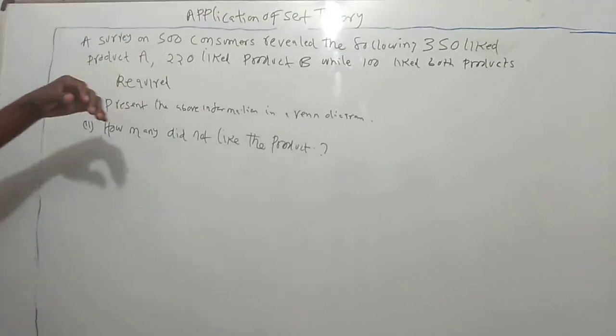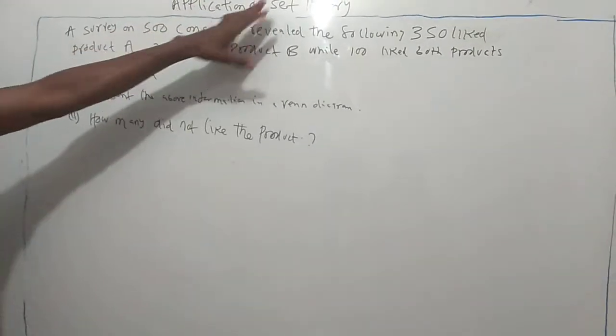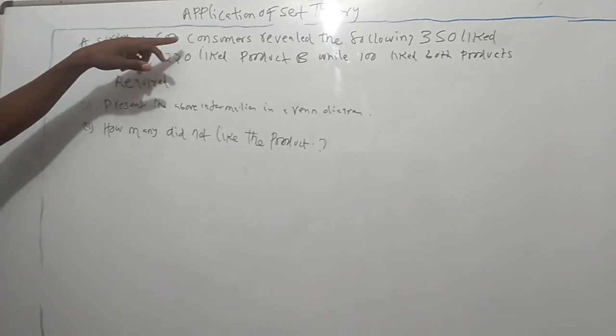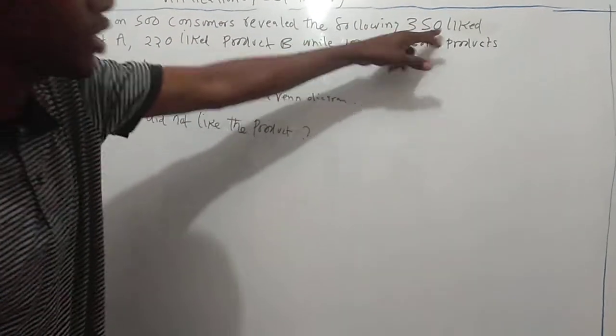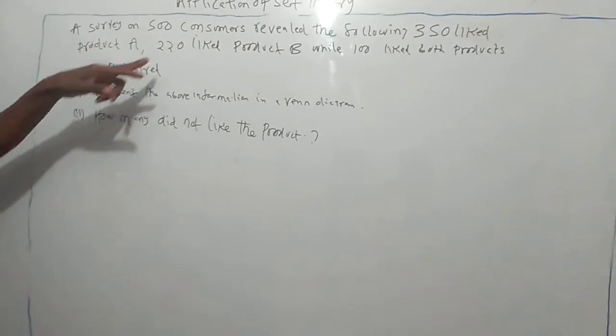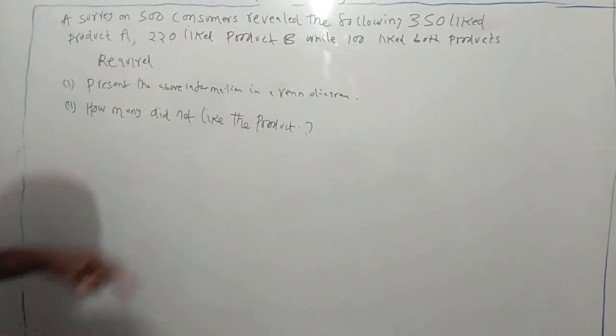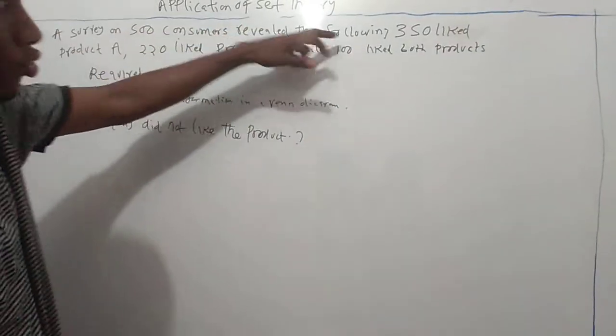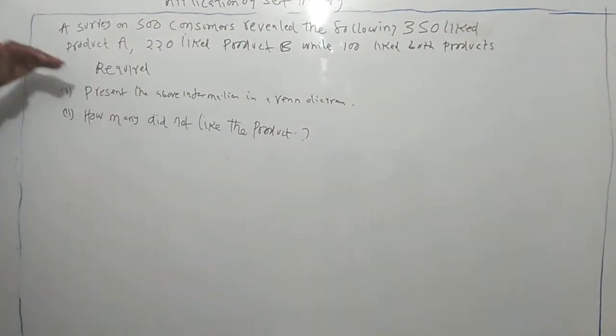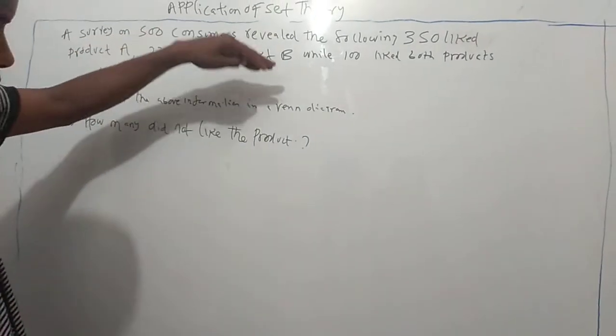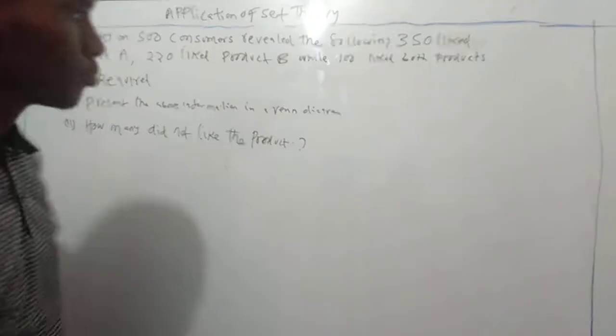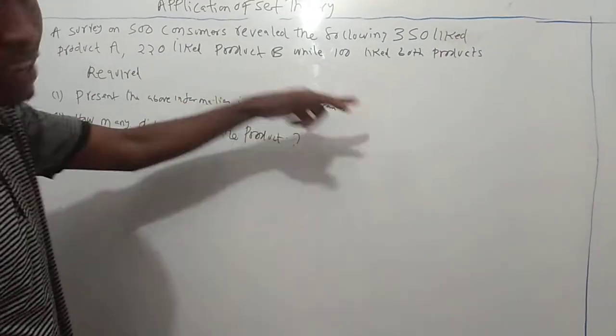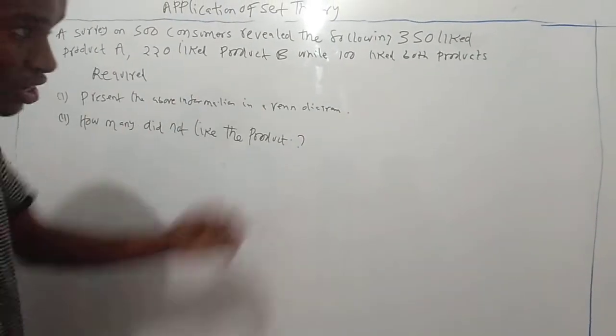Welcome. There is a brief class here in application of Set Theory. We are told a survey on 500 consumers revealed the following: 350 like product A, 220 like product B, while 100 like both products. A survey on 500 consumers revealed the following: 350 like product A, 220 like product B, while 100 like both products. We are required to present the above information in a Venn diagram, then determine how many do not like the product.